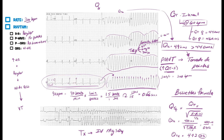Looking at this other EKG down here, you can see this nice twisting look — they say it's supposed to look like a ribbon. You can see how it twists: points where you have high QRS complexes, then little QRS complexes, then back to high, then back to low. This is Torsades de Pointes. Let's move on to the next EKG, which is going to be V-fib.